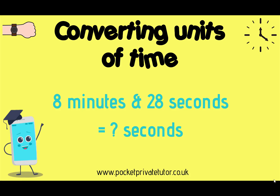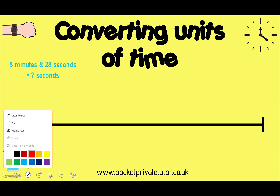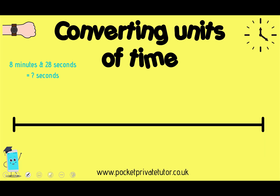Now let's look at converting 8 minutes and 28 seconds into seconds — the other way around to what we were doing earlier. We still think about how many of one unit fit in another: 1 minute equals 60 seconds. The time we're working with is 8 minutes and 28 seconds.